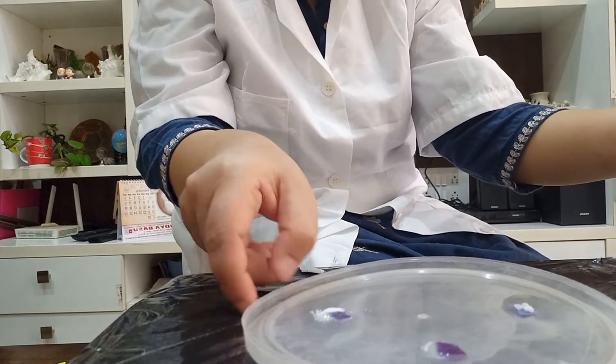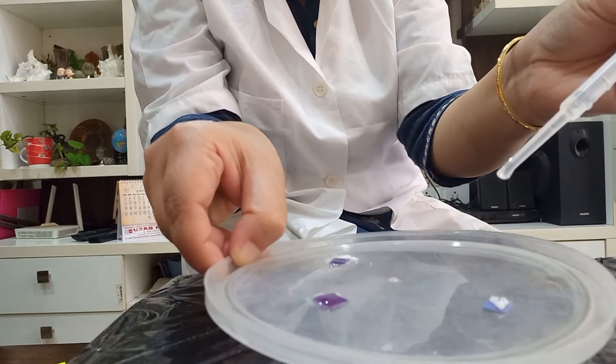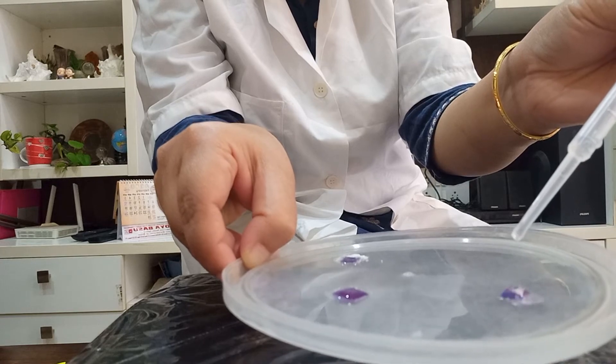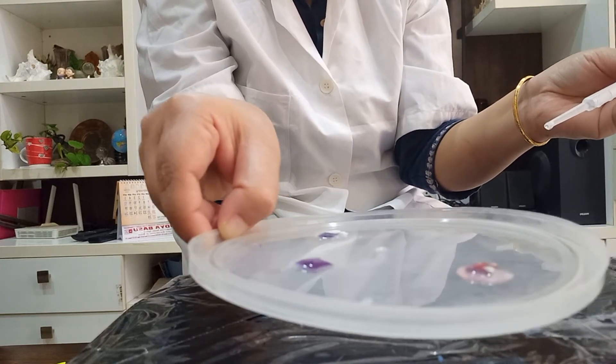Now, this is citric acid. We are going to add few drops of water here. Now, you can see the blue litmus is slowly changing into red color.